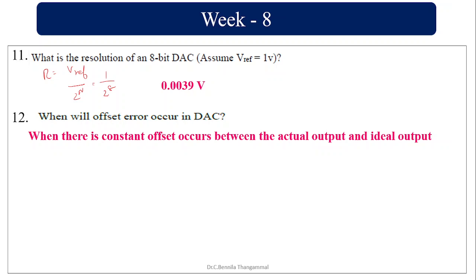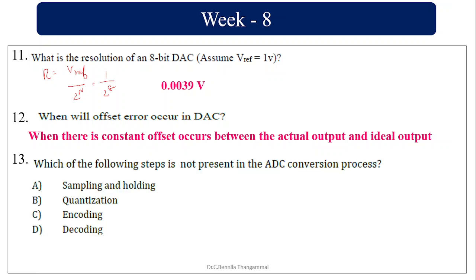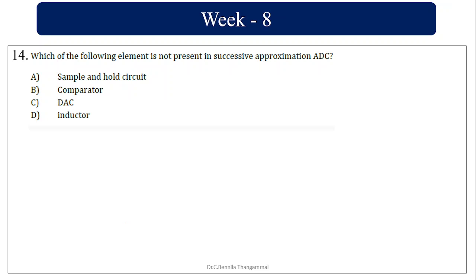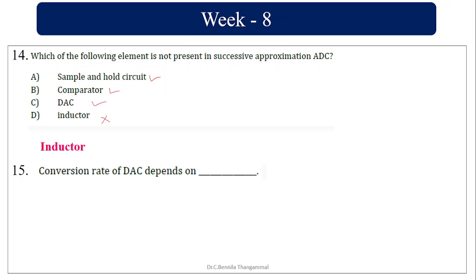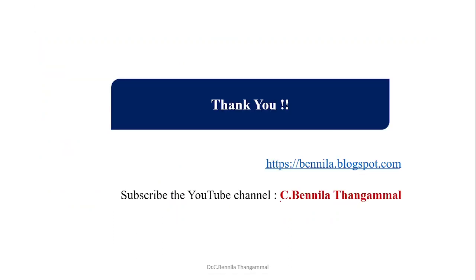When will offset error occur in a DAC? It is when there is a constant offset between the actual output and the ideal output. Which step is not present in ADC conversion? Sampling, hold, quantization, and encoding are present — decoding is not. In successive approximation, the element not present is the producer. Conversion rate of ADC depends upon clock speed and the data time of the converter. Thank you, have a nice day — subscribe to my channel for automatic updates.